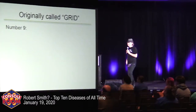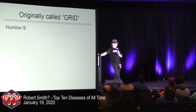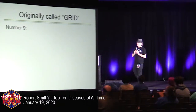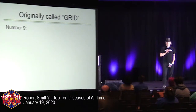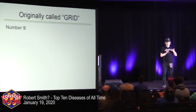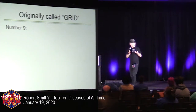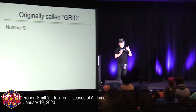Number 9. This disease was originally called GRID — gay-related immune deficiency disease — which is HIV/AIDS. When it was first discovered in late 1980, all these gay men in San Francisco and New York were dying of diseases they shouldn't really have. They didn't see a new disease; they saw old diseases popping up that weren't thought to be circulating, because another disease was eating away at their immune systems.